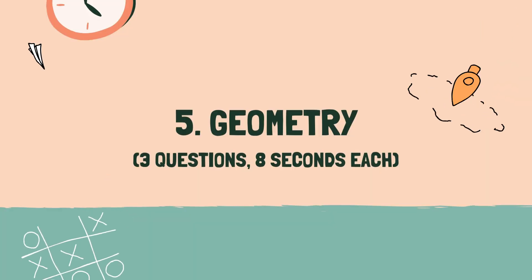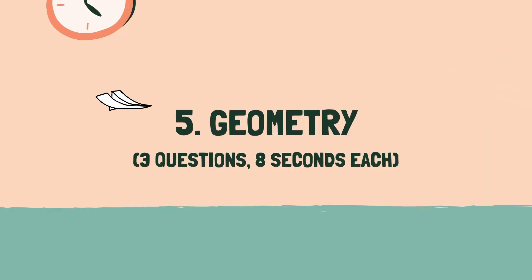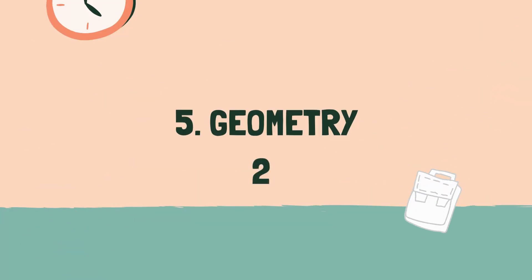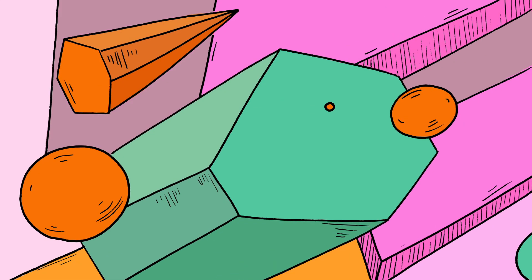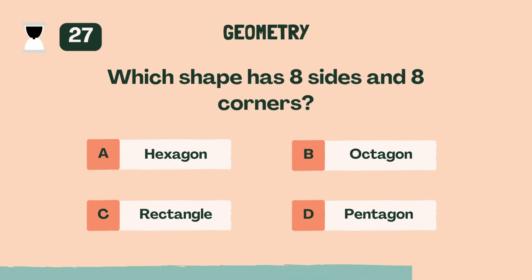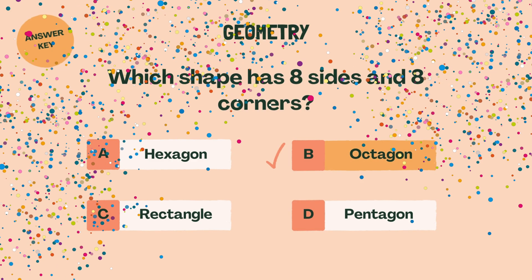Category 5: Geometry. 3, 2, 1, go. Which shape has eight sides and eight corners? B, octagon.